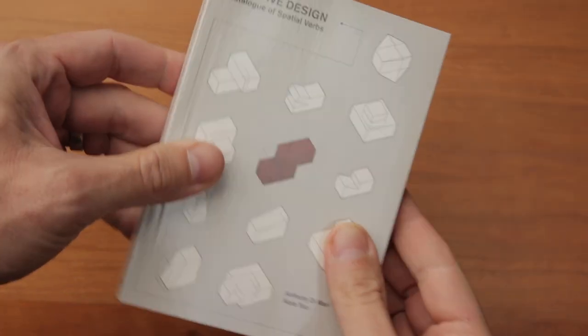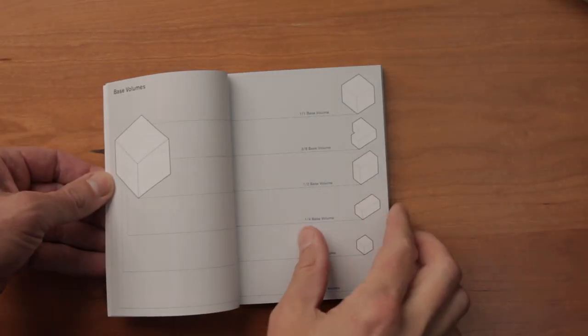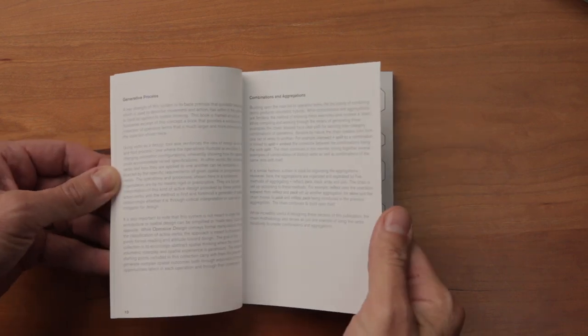It's a concise book, with only a very few introductory pages of text in the beginning. And as such, it leaves room for interpretation. But equally, it leaves out some of the more complex variants of form and space making.